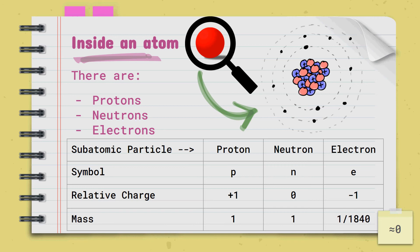The proton has a relative charge of plus one, neutron is neutral so it's zero, and electron is minus one. The mass of a proton is one, neutron is one, and electron is 1/1840, which can be approximated to zero. So it doesn't contribute to the relative atomic mass of the atom.